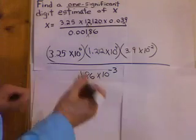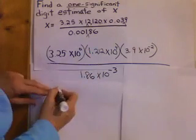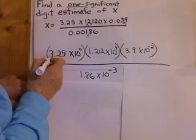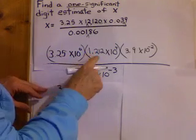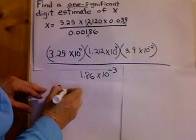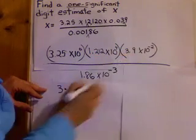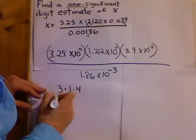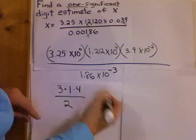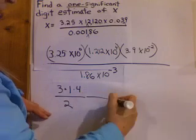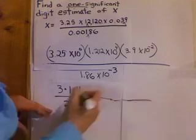So, now that my number is all in scientific notation, I'm going to round them all the parts to one digit. 3.25 rounds to 3. 1.212 rounds to 1. 3.9 rounds to 4. And then, on the bottom, 1.86 rounds to 2. And then, I'm going to take all the exponent parts from the scientific notation and group those together.